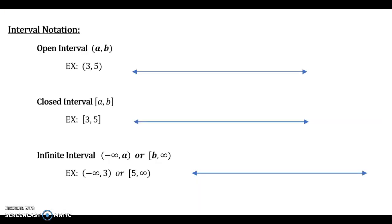Now we're going to take a look at interval notation using parentheses and brackets. Our first type is open intervals. Open intervals use regular parentheses. When you're using parentheses and graphing an interval — for example, (3, 5) — this is just like graphing when you have an open circle.